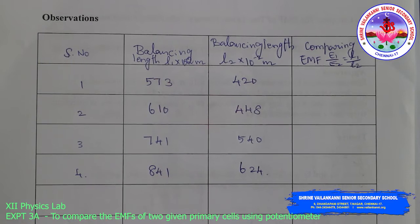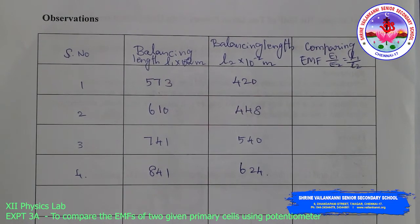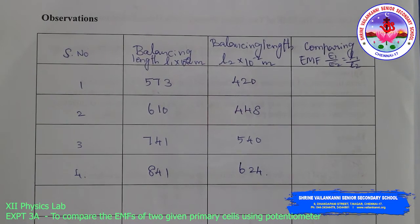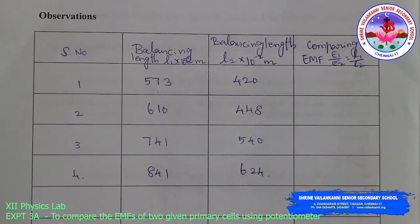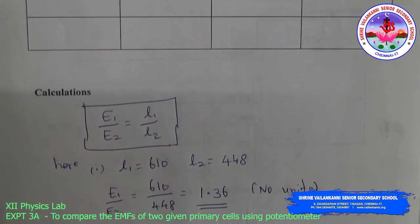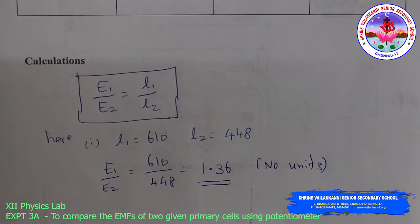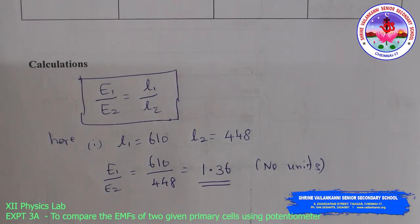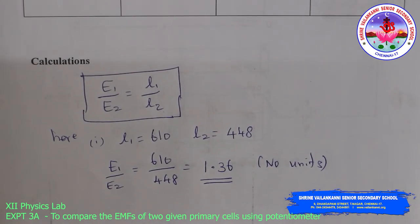Tabular column: Balancing length L1 (×10⁻² m), Balancing length L2 (×10⁻² m), and comparing EMF ratio E1/E2 = L1/L2. The values obtained are: L1 = 573, L2 = 420; L1 = 603, L2 = 440; L1 = 610, L2 = 448. For example, using L1 = 610 and L2 = 448, E1/E2 = 610/448 = 1.36 (no unit, since we are comparing the cells).